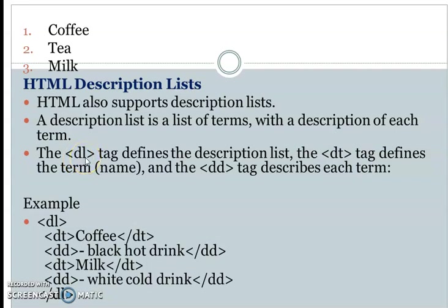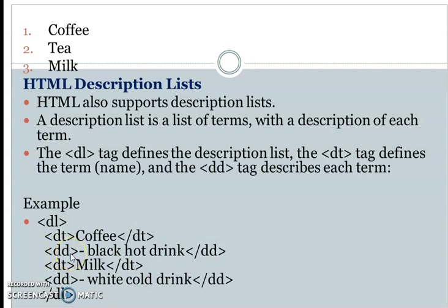The description list uses the DL tag. To define a term, we use the DT tag — for example, 'coffee' — and close the DT tag. To define the description, we use the DD tag. For coffee, the description is 'black hot drink', then close the DD tag.